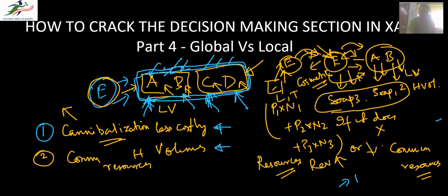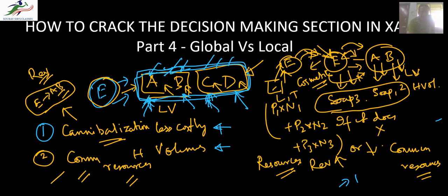The answer to whether I should introduce product E: if there is a chance of cannibalization — meaning E is related to A and B — then I have to see what the impact on total revenue is. If not, then I have to see the impact on common resources. Of course, if E is related to A and B, I still have to see the impact on common resources. These are the two decision points on which I have to decide whether to introduce this product.